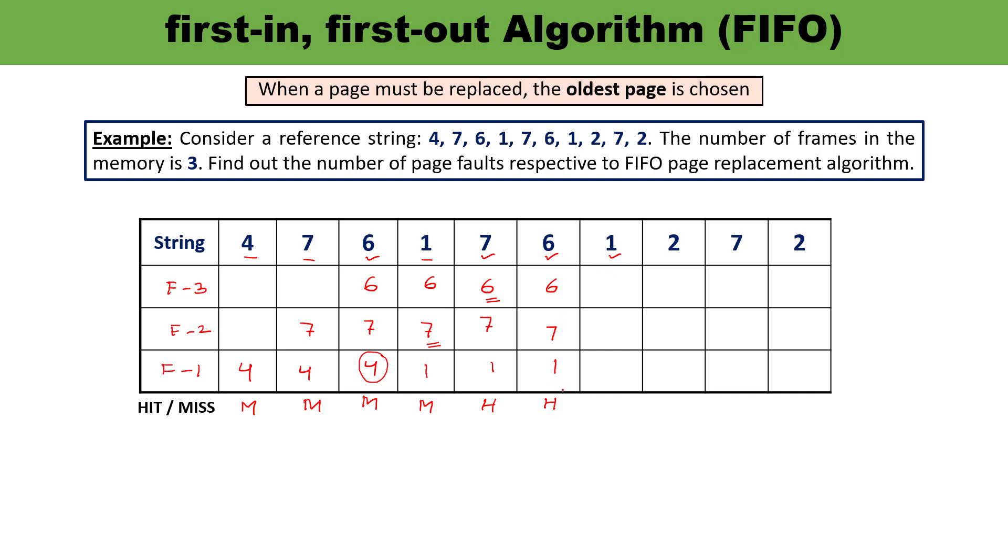Next is 1. 1 is already available. It means this is the condition of hit. Nothing will be replaced and you will write the same data as it is.